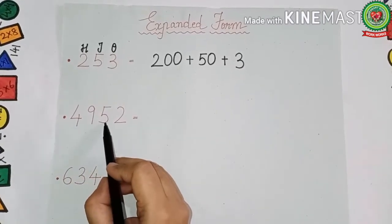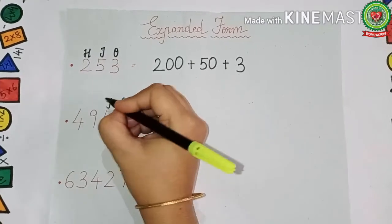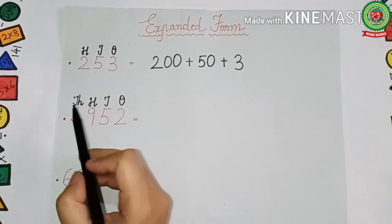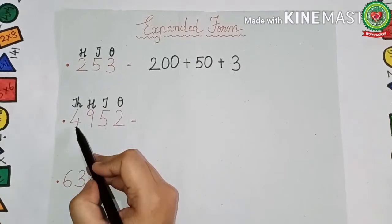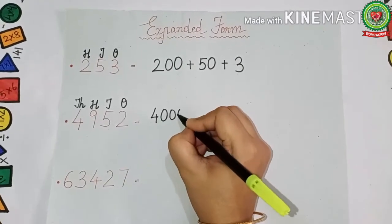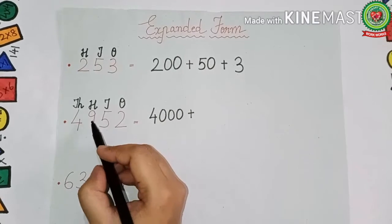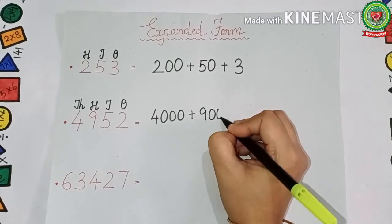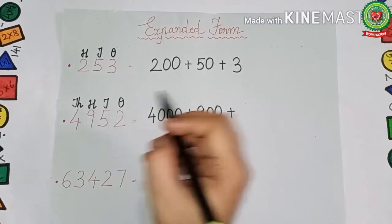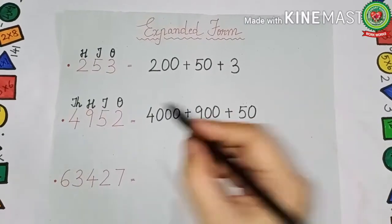The next example is 4952. We write the place value table: ones, tens, hundreds, thousands. Thousands has three zeros, so 4 is written with three zeros — that is 4000. Nine is under hundreds, so we write 9 with two zeros — that is 900. Five is under tens, so we write 5 with one zero — that is 50.